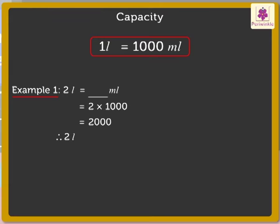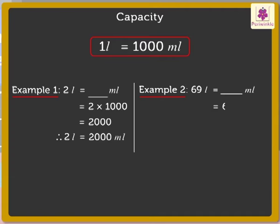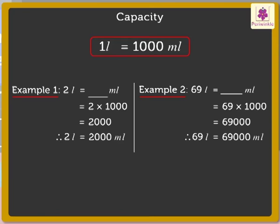Let's try one more example. Let's convert sixty-nine liters into milliliters. So here, sixty-nine into one thousand is equal to sixty-nine thousand milliliters. Thus, we get sixty-nine liters is equal to sixty-nine thousand milliliters.